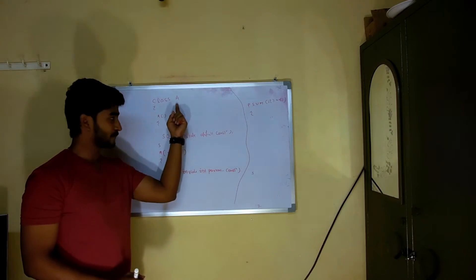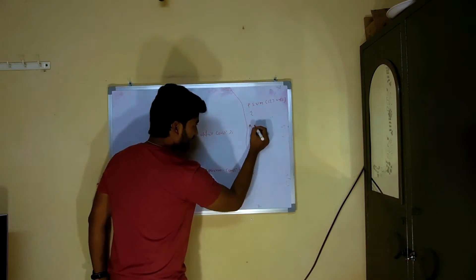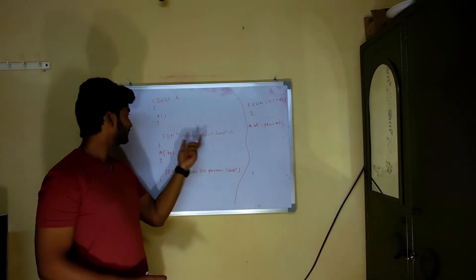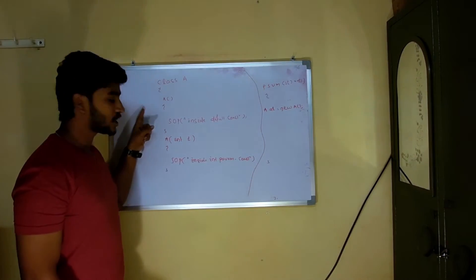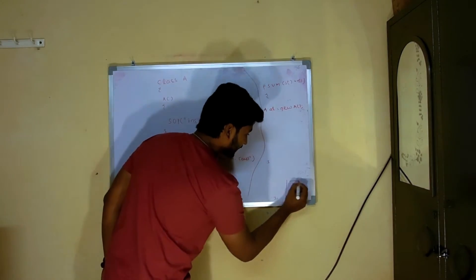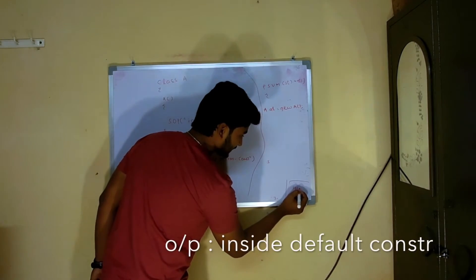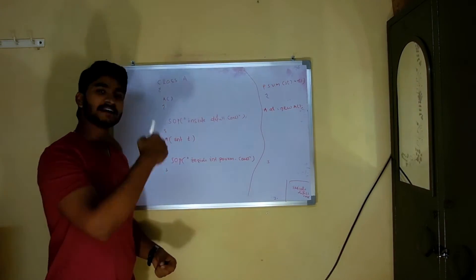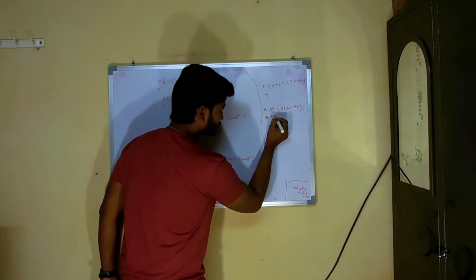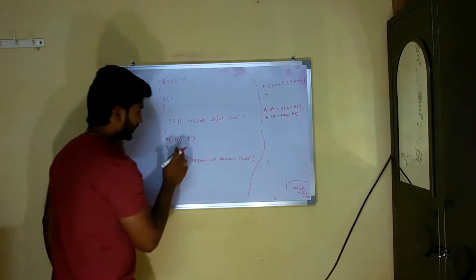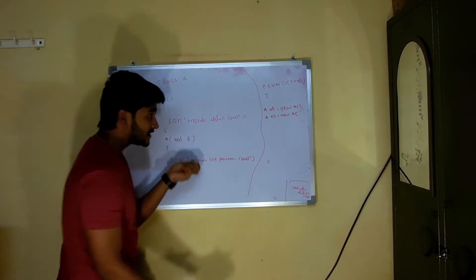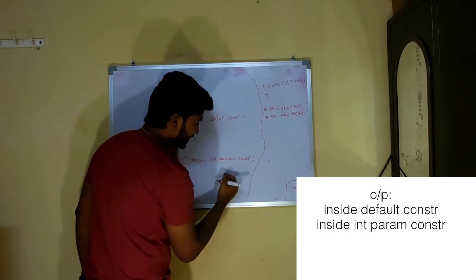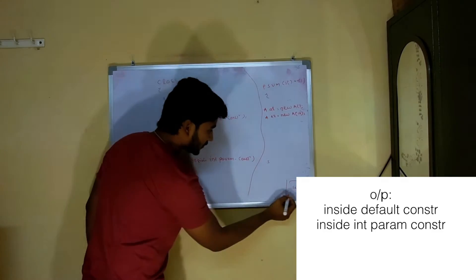Let's create an object using the default constructor: 'A a1 = new A()'. While compiling, the JVM checks if a default constructor is available — yes it is — so it goes inside and prints 'inside default constructor'. Now let's create another object using the int constructor: 'A a2 = new A(10)', which will call the int param constructor.